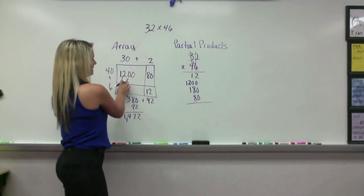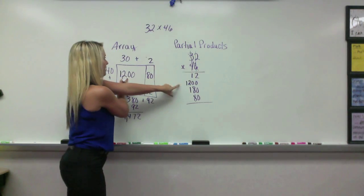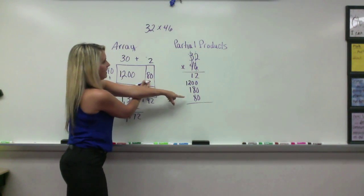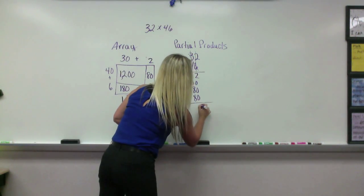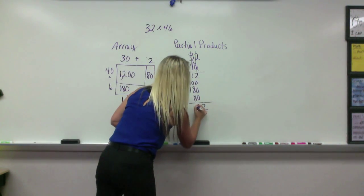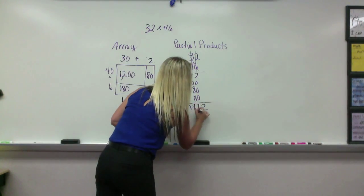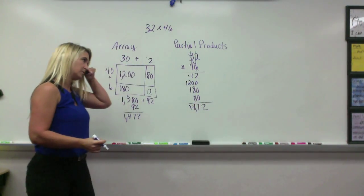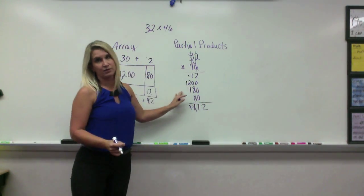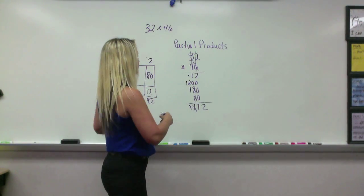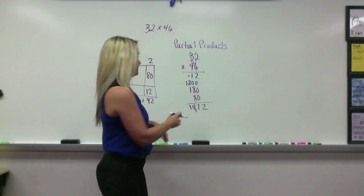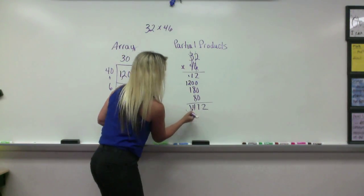And if we add those, then we see that those are the same numbers. 1,200, 180, 80, and 12. We add them all together. I'll do my math again. 16, 17, 4. And so we should have 1,472. Does it matter what order they do these, as long as they're keeping track of which ones they've done, so that they don't get mixed up?